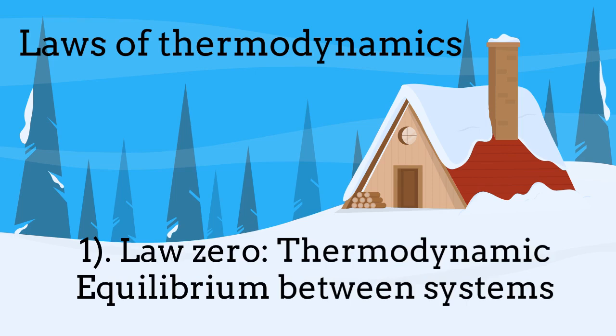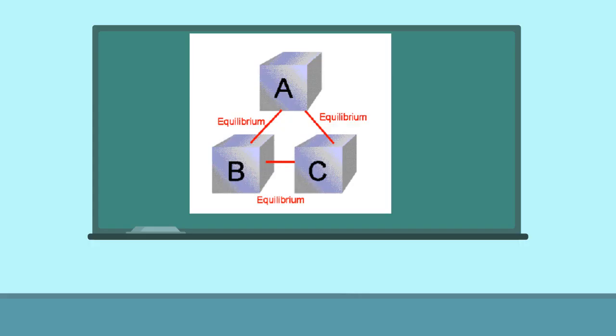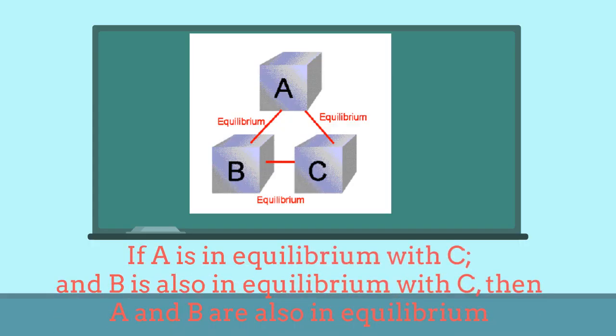The zero law corresponds to the thermal equilibrium between systems. Here we have three bodies, A, B and C. If A and B are in thermal equilibrium and if B and C are also in thermal equilibrium simultaneously, then the bodies A and C are also in equilibrium.